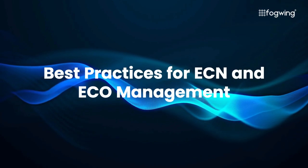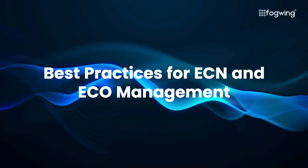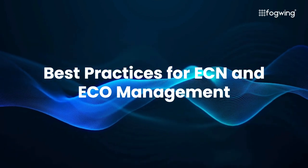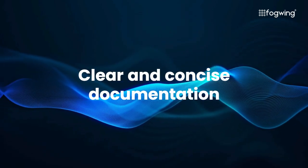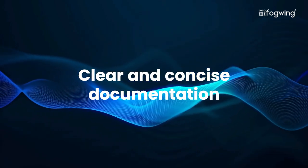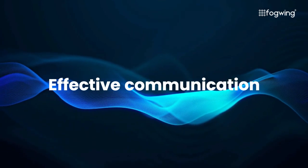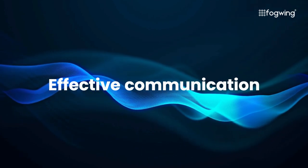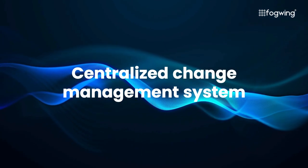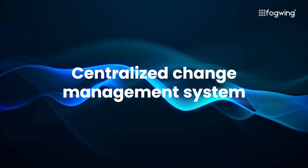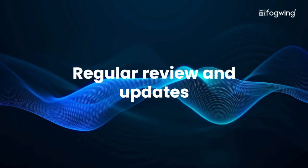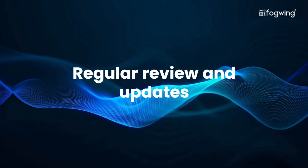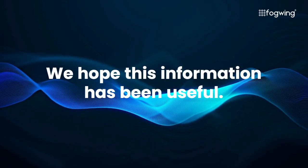Best Practices for ECN and ECO Management: to maximize the benefits of ECNs and ECOs, consider the following best practices. Clear and concise documentation: ensure that ECNs and ECOs are well-written and easy to understand. Effective communication: communicate changes clearly and timely to all stakeholders. Use a centralized change management system to track and manage ECNs and ECOs. Regularly review and update ECN and ECO processes to keep them aligned with evolving business needs.